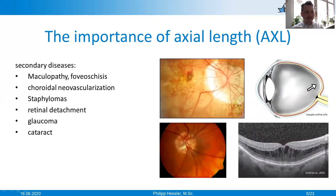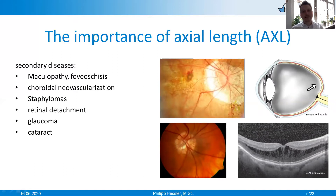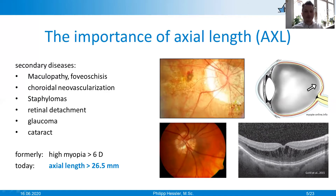There are some secondary diseases in high myopia — for example, maculopathy, choroidal neovascularization, staphyloma, retinal detachment, glaucoma, and cataract. Because of that, the definition has changed a little bit. In the past, high myopia was often referred to as a refractive error of above six diopters. Today, some experts like to speak of high myopia from an axial length of 26 mm or more, as the risk of pathological consequences is greatly increased from this length.